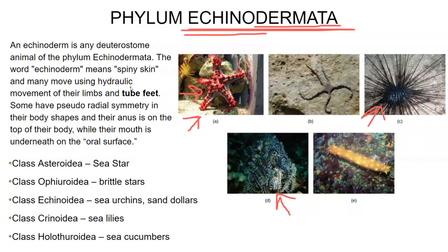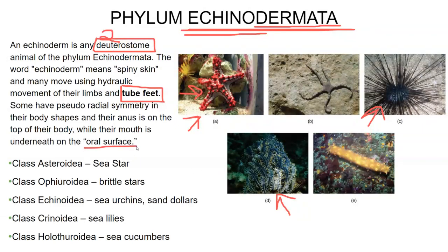On the underside of the sea star are many, many little tube feet sticking out, which they can move around and attach to rocks. They're usually not great at moving around, but they do move. Interestingly, these are deuterostomes — mouth second. They have an oral surface and an aboral surface, meaning their mouth is on the underneath side where they eat, and their anus is on the top. Their waste goes out the opposite side from where their food goes in.